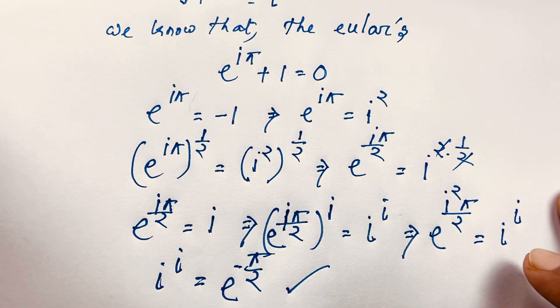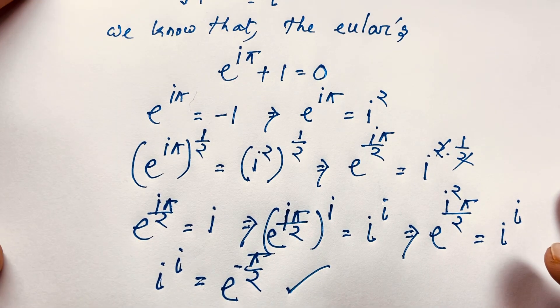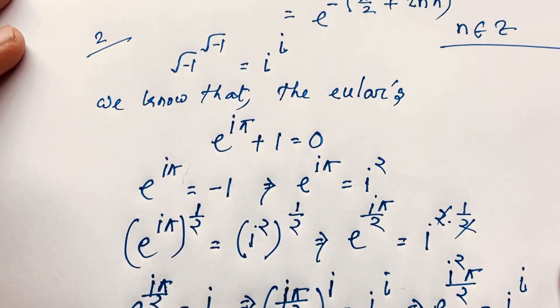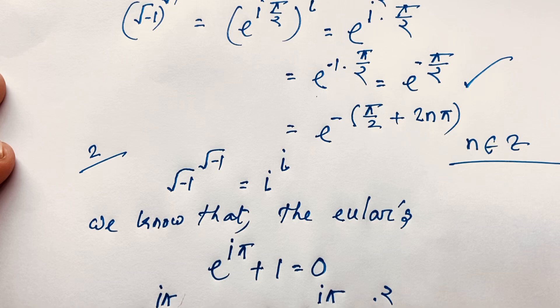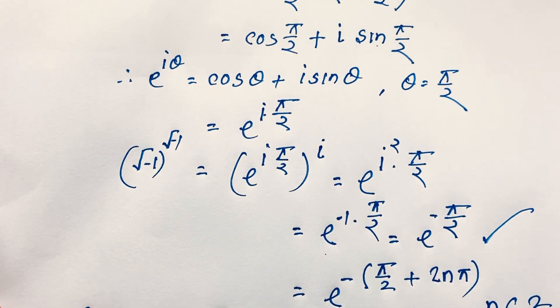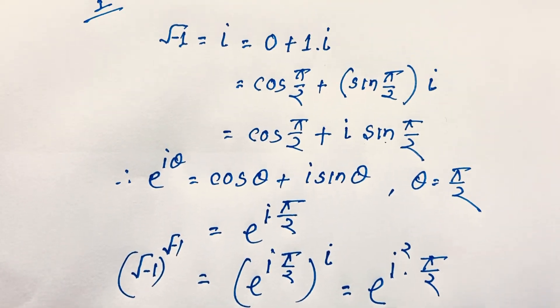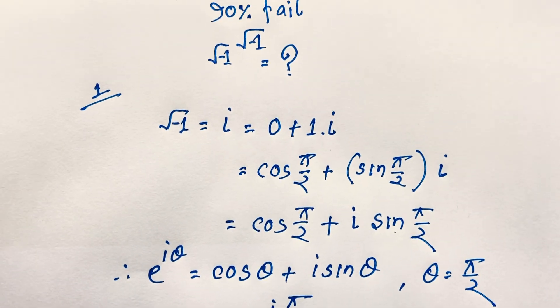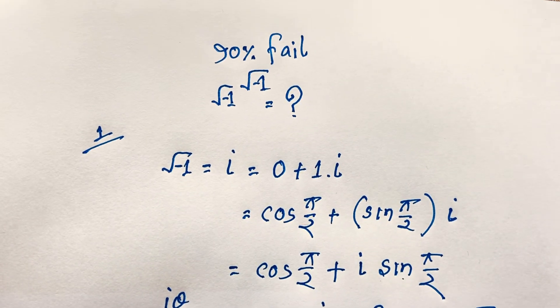So I have solved this complex number math problem using two methods, and i^i = e^(-π/2). It is an interesting math result. Thank you all — if you enjoyed this problem please subscribe to my channel for more interesting videos. Goodbye, take care everyone, have a good day!